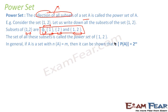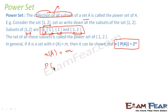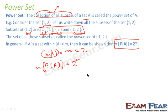We should remember the formula: if the number of elements in set A is m, then the number of elements in the power set of A is 2 to the power m. In our example, set A = {1, 2} had m = 2 elements. So 2² = 4, and indeed the power set has 4 elements. Hence the formula is verified.